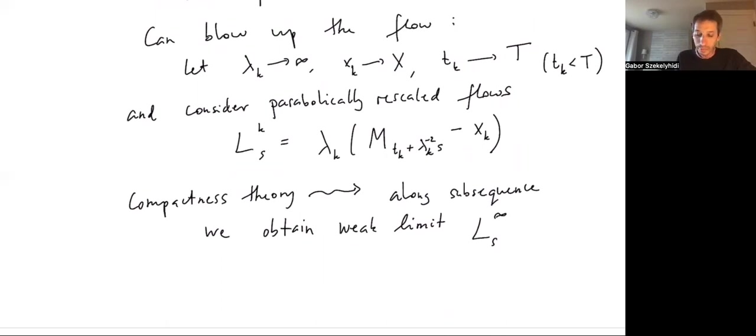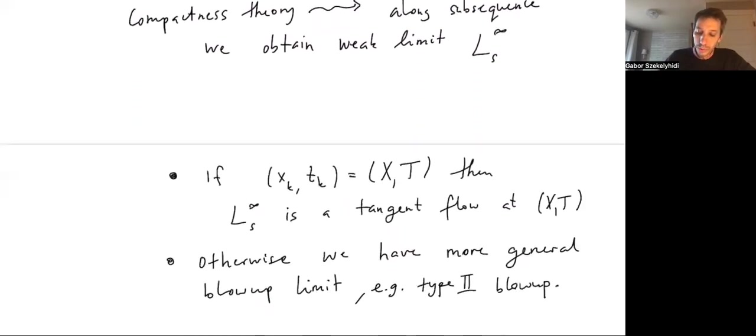Now we have the sequence L_k of mean curvature flows. Then there is a very general compactness theory, analogous to similar results for Einstein metrics or minimal submanifolds, which tells us that along a subsequence, as k goes to infinity, we can obtain some kind of weak limit, L_∞. This L_∞ will be what is called a Brakke flow. You should just think of it as some sort of possibly singular solution of the mean curvature flow. This L_∞ is describing what our original flow looks like at smaller and smaller scales as we approach the singular point.